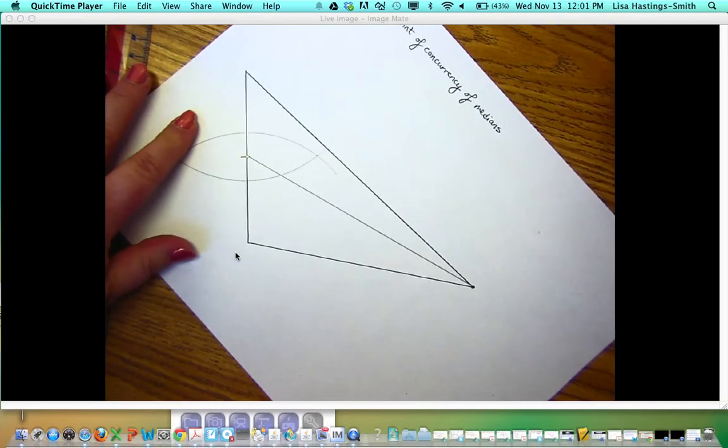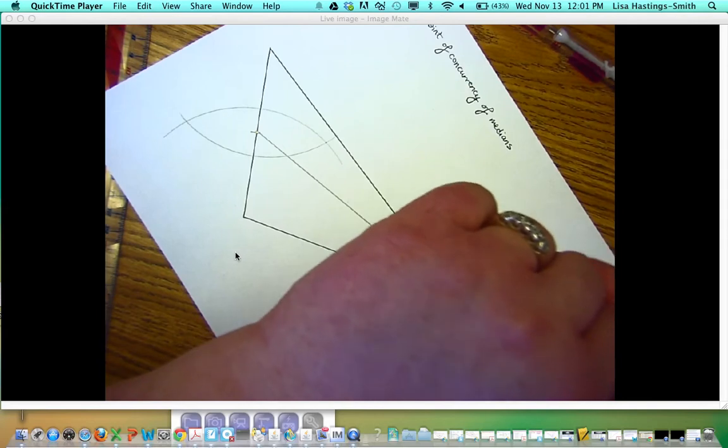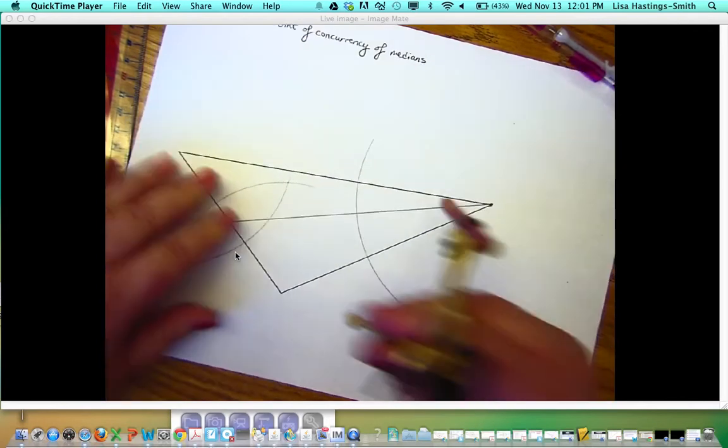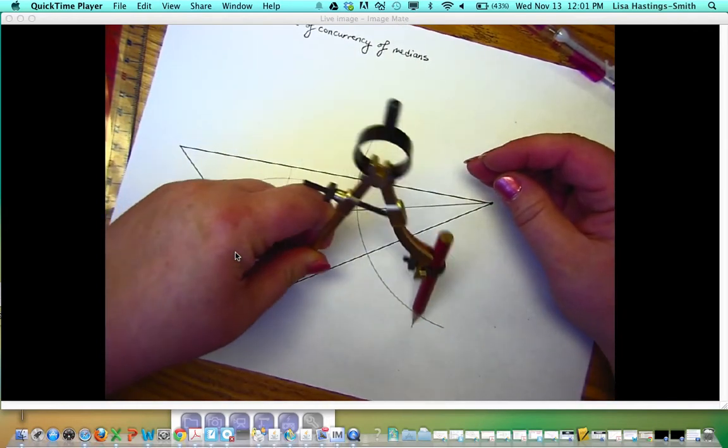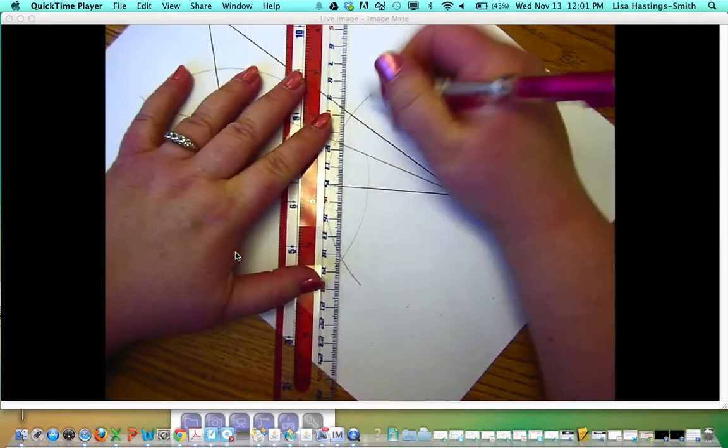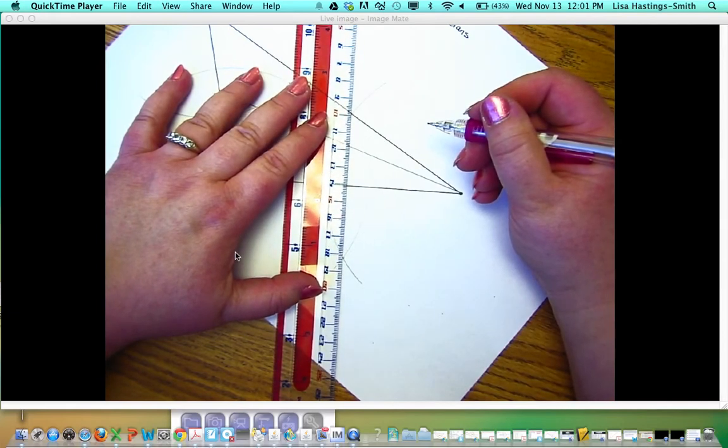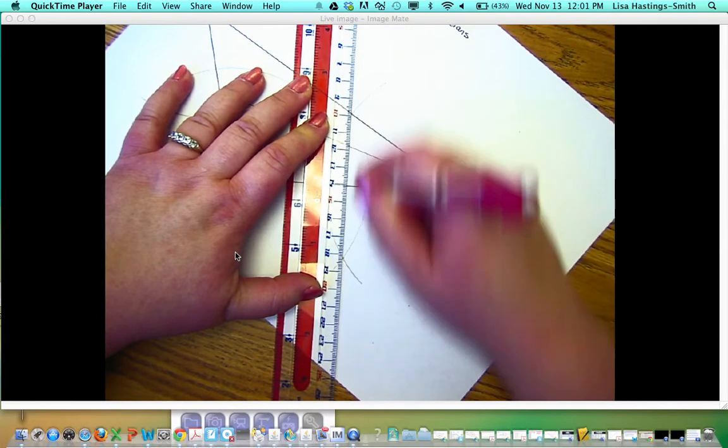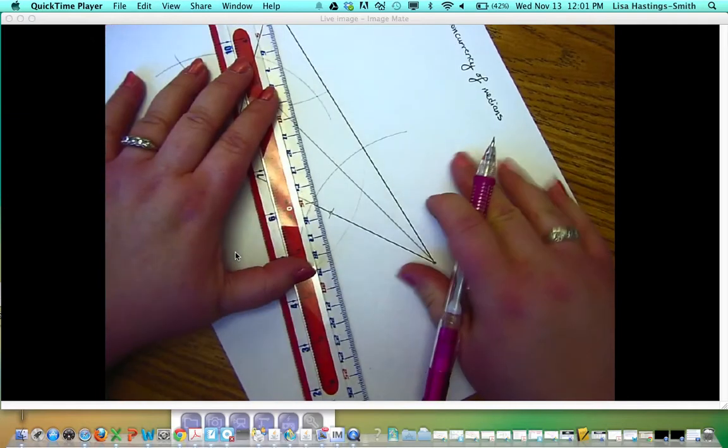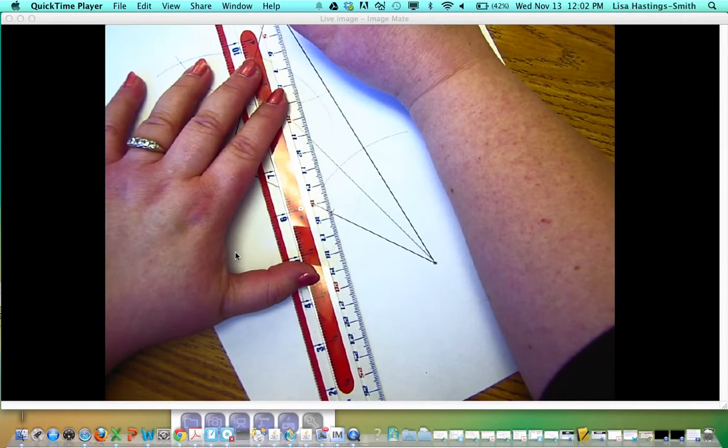Then I'm going to bisect the next side here. I need to open the compass more because it's got to be open more than half the length of the segment. So arc there. From the other endpoint, make an arc. You can call these football markings, or you can call them Jesus fish. So this would be the whole perpendicular bisector. I really just need to mark the midpoint there. And then I'm going to go from this vertex to that opposite midpoint. And that would be the second median.